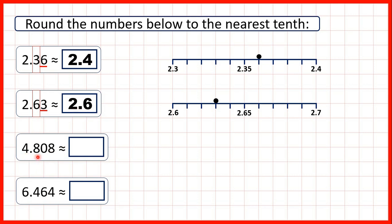Now we have 4.808. This time we have three digits after the decimal point, but the thousandths digit doesn't make a difference when we're rounding to the nearest tenth. We do the same thing — we find the tenths digit and underline the hundredths digit. Now we have a zero, so we're rounding down. That means the 8 stays the same, and digits to the left of what we've circled stay the same as well.